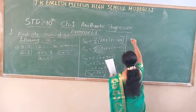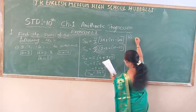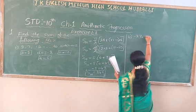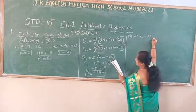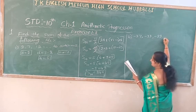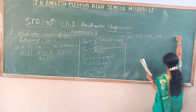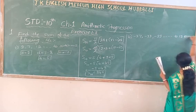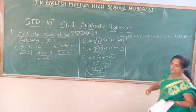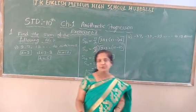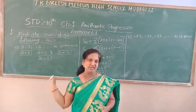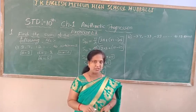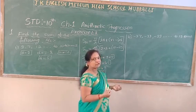The second question: the AP is minus 37, minus 33, minus 29, up to 12 terms. So now we know the same method — but the terms are negative terms. Be careful when the negative terms come. Which formula can I use? The same formula: Sn equals n by 2 into 2a plus n minus 1 into d.